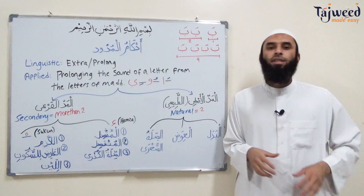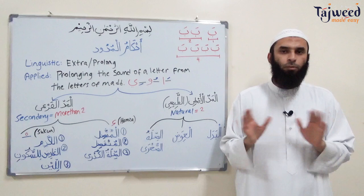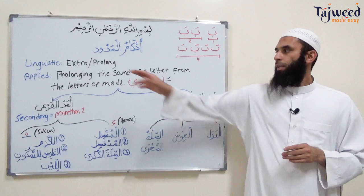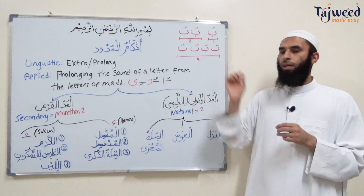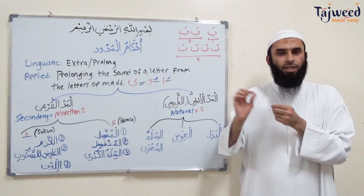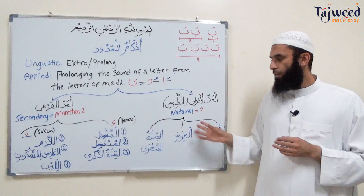So altogether there are nine different types of mad. Are there any more? No, there's no more. From the beginning of the Qur'an until the end, these are the only nine types of mad. So the two main categories are: asli — just two counts, and far'i — more than two counts.